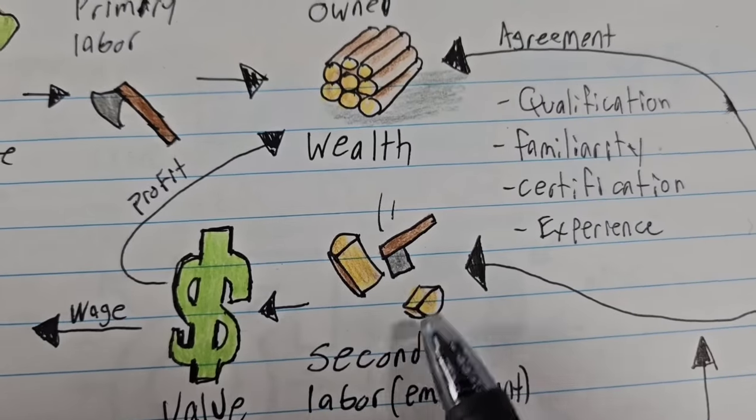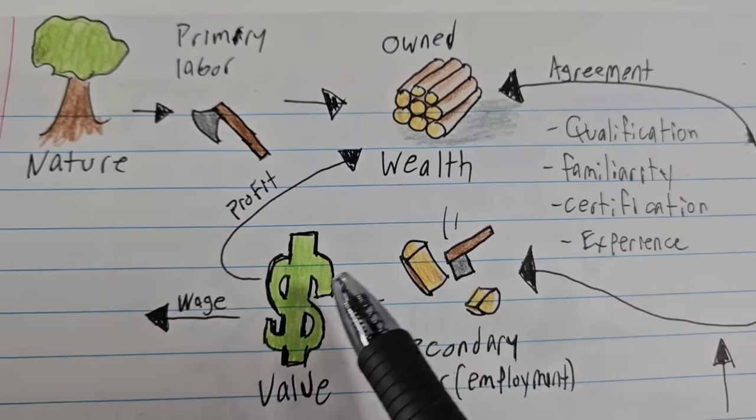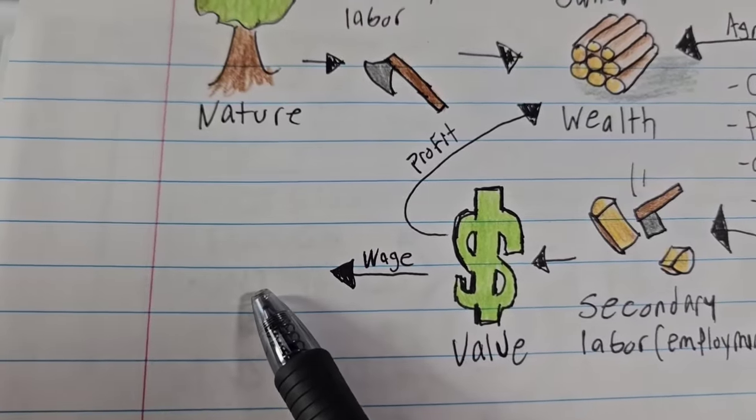You could sell the firewood for more than the log since it's been processed. And then the owner of the wealth gets to keep some of that as profit. And some of it goes as a wage to the employee.